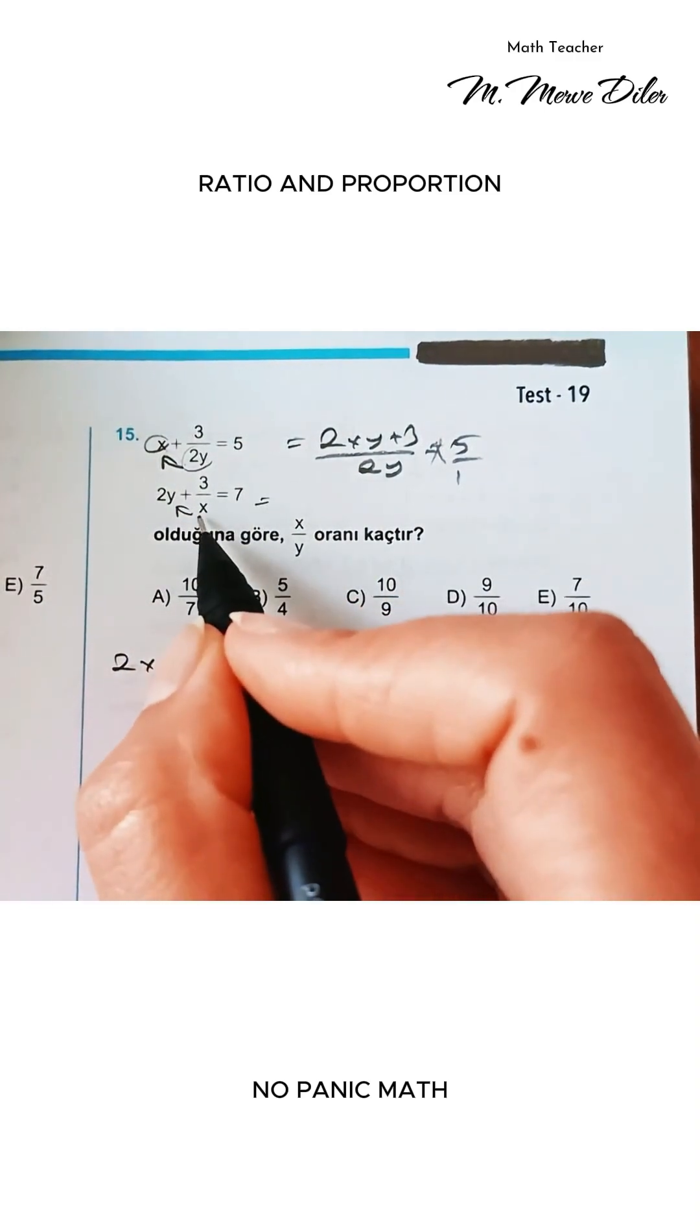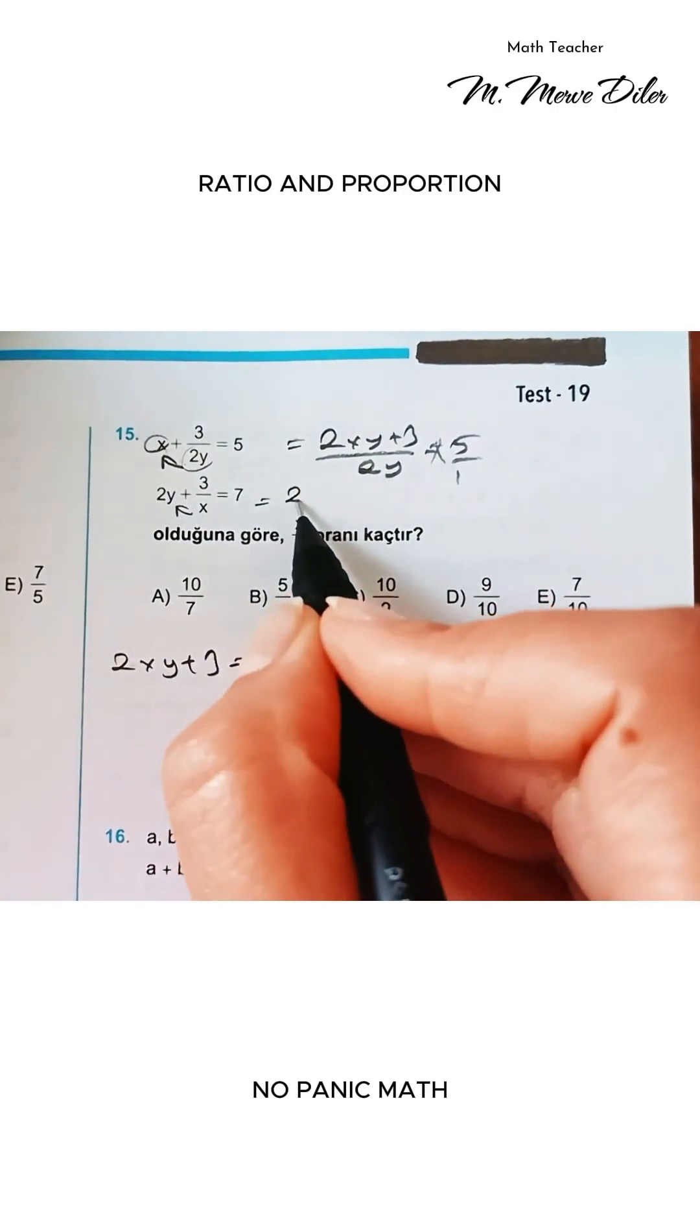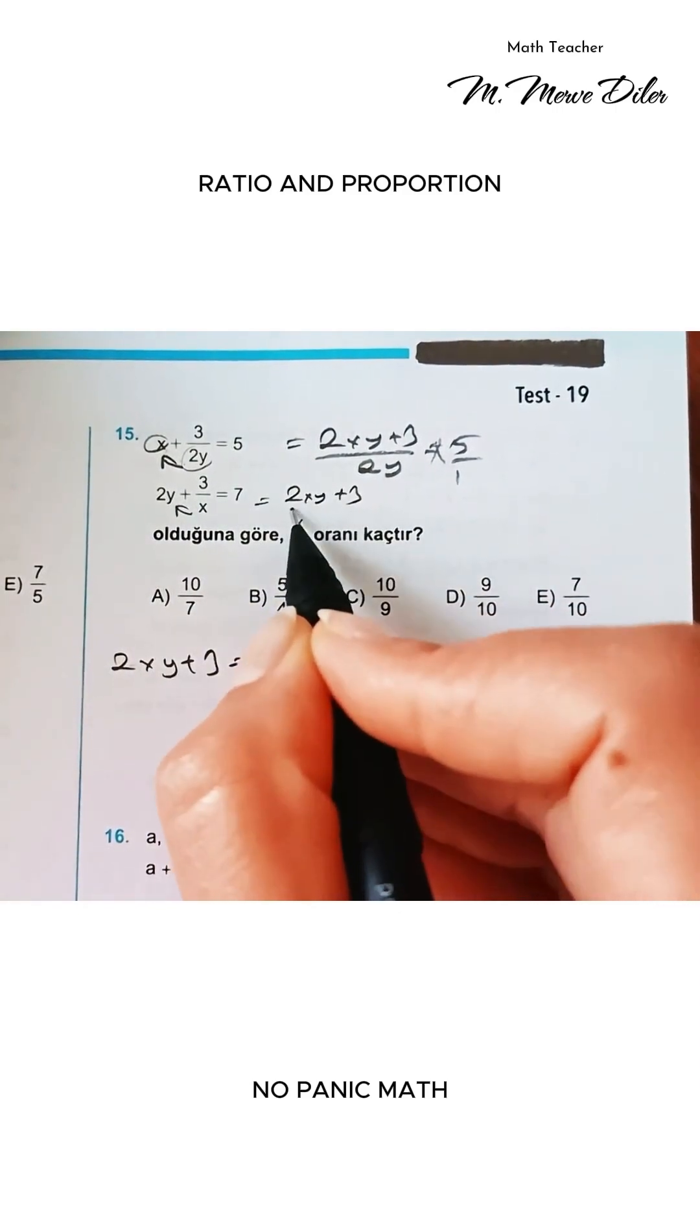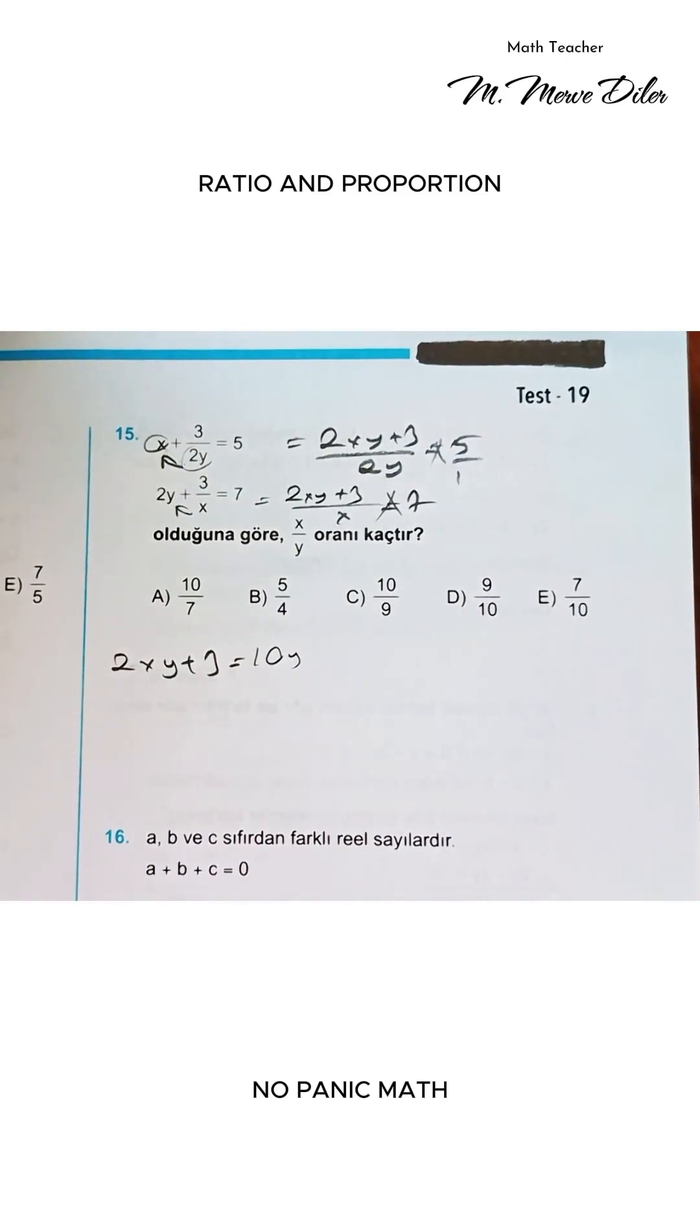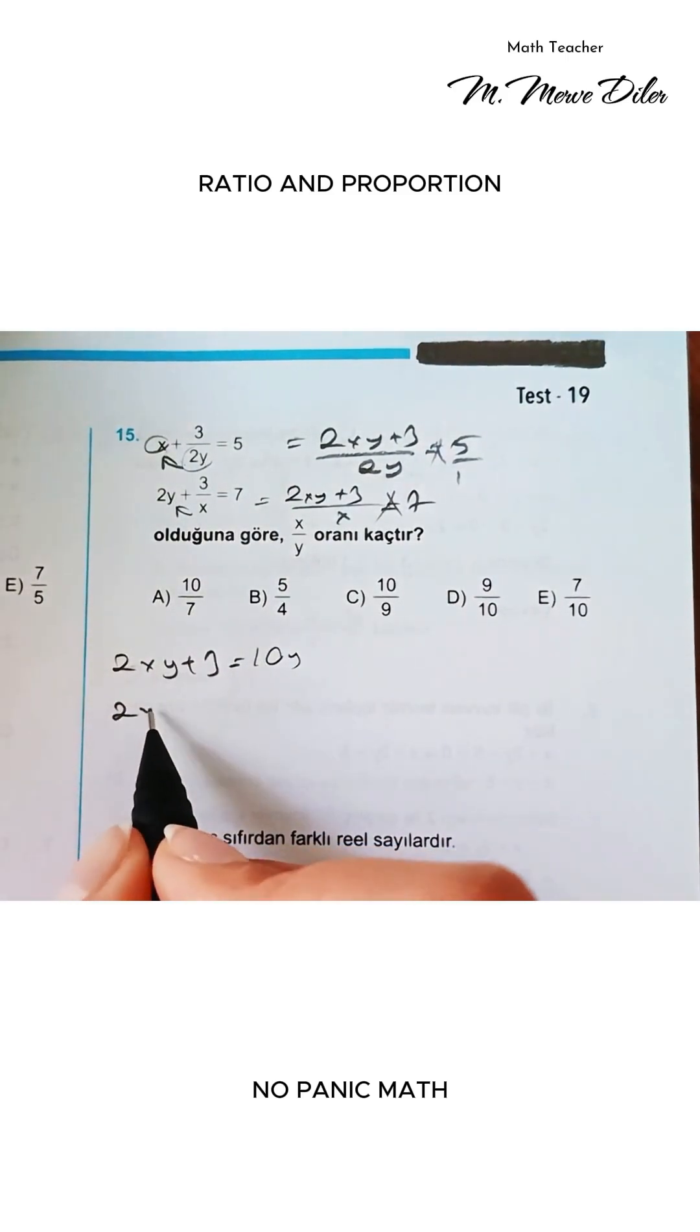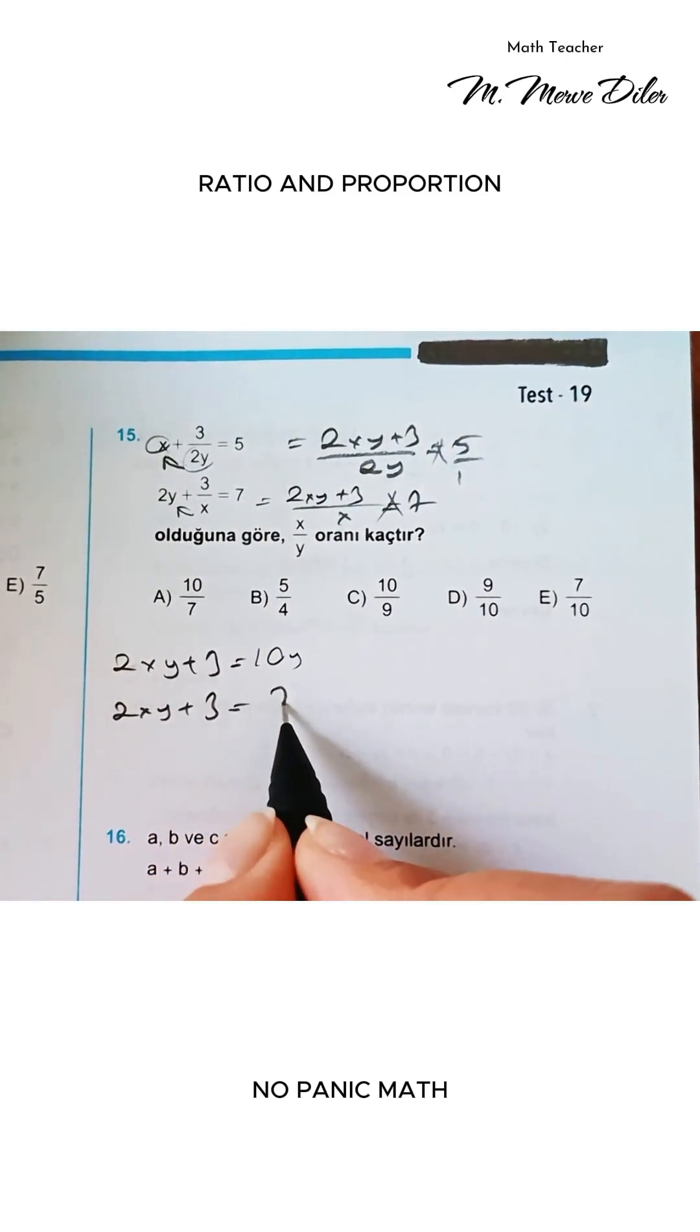Now, let's do the same thing for the next part. Multiply x by 2, so 2xy plus 3 over x equals 7. Friends, if we do another quick cross multiplication like this, we'll get 2xy plus 3 equals this time 7x.